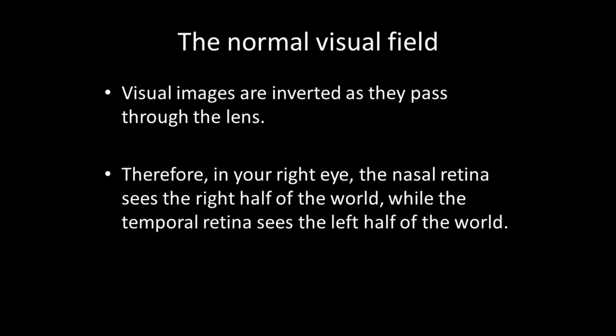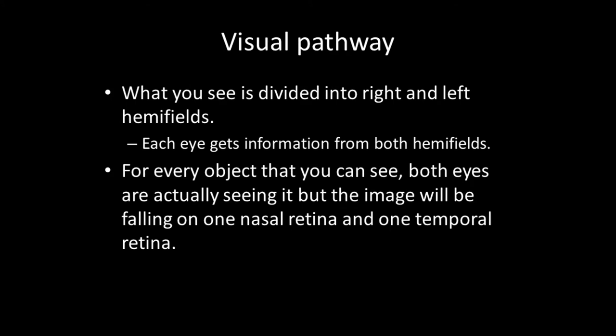It's also useful to remember that what you see is divided into the right and left hemifields, and each eye gets information from both hemifields. So for every object that you see, both eyes are actually seeing it, but the image will be falling on one nasal retina and one temporal retina.